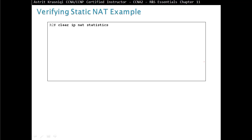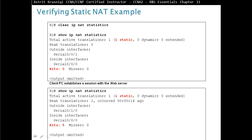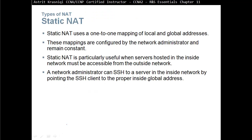To verify the static NAT example, we clear IP NAT statistics, and then when we do 'show ip nat statistics' we can see that we have one static NAT configured with no hits, meaning no communication has occurred. After the PC establishes a session with the web server, we do 'show ip nat statistics' again and we can see one static NAT configured and now five hits. Static NAT uses one-to-one mapping and is particularly useful when servers on the inside network must be accessible from the outside. A network administrator can SSH to a server on the inside network by pointing the SSH client to the proper inside global address.